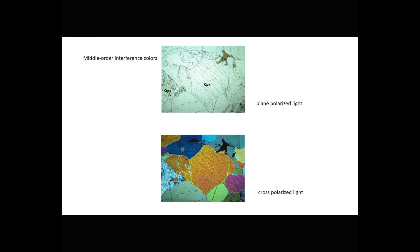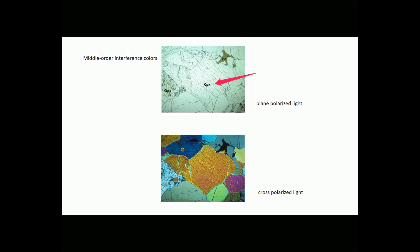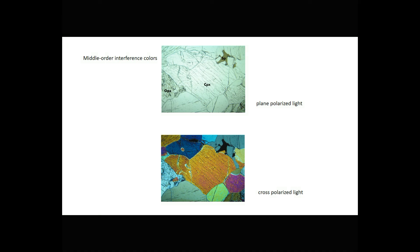Here are two views of the same thin section. The top one is plain polarized light and the bottom one is cross polarized light. In the top view, you can see a large grain of clinopyroxene in the middle that shows great cleavage. In the bottom, we see it has middle second-order colors. We can also see orthopyroxene in these photos — in the plain polarized view it shows slightly greater relief than the clinopyroxene, and in the cross polarized view we see first-order interference colors. Orthopyroxene commonly has first-order colors and clinopyroxene commonly has higher-order colors, and that's one way we tell the two minerals apart.